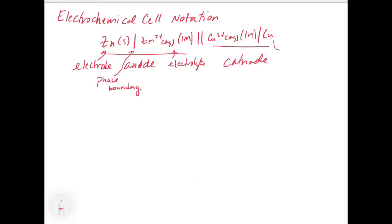The same is true for the other side — this is the electrode and this is the electrolyte. The cathode is just written in the other direction: for the anode the electrode is on the left, and for the cathode the electrode is on the right. The double line in the middle denotes the salt bridge.